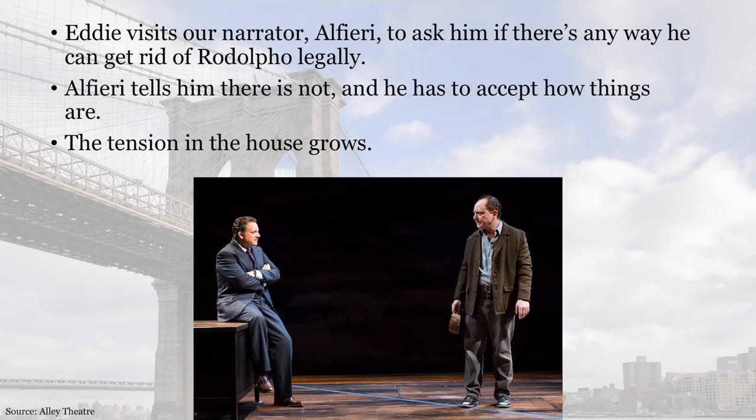Eddie visits the narrator Alfieri, the Italian-American lawyer, to ask him if there's any way he can get rid of Rodolfo legally. Alfieri tells him that there is not, and that he has to accept how things are. Tension in the house continues to grow.